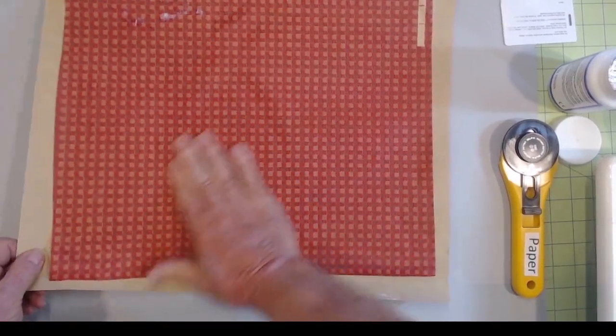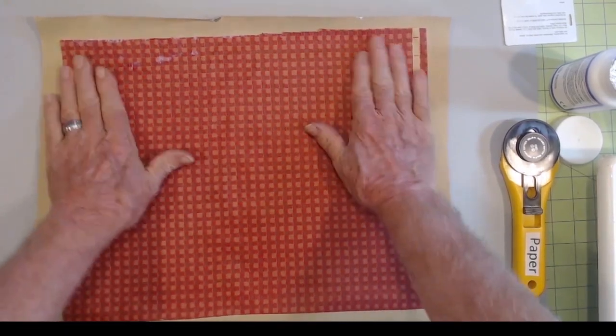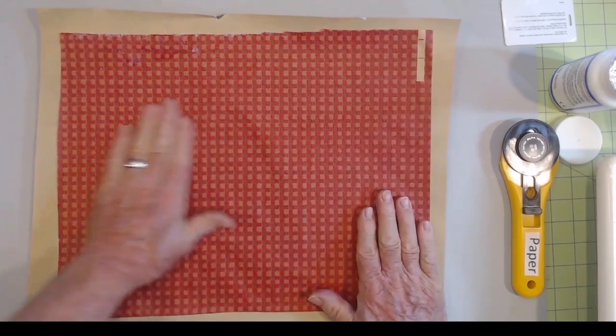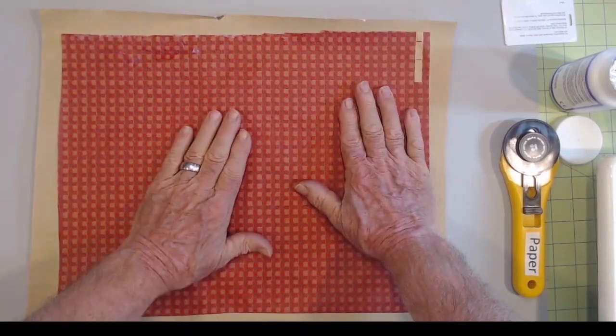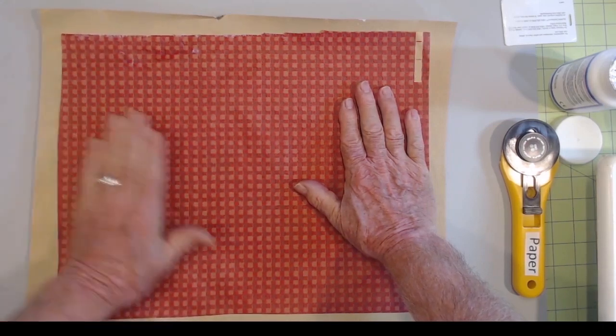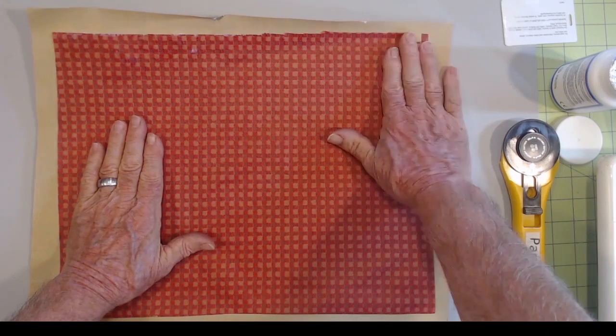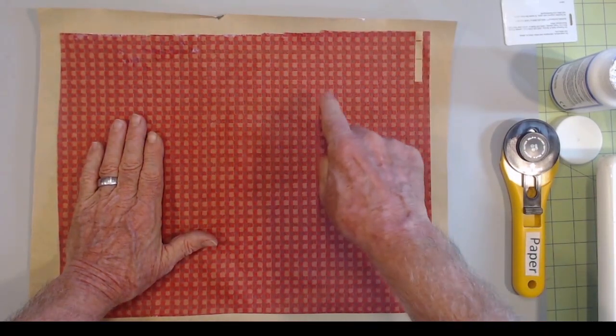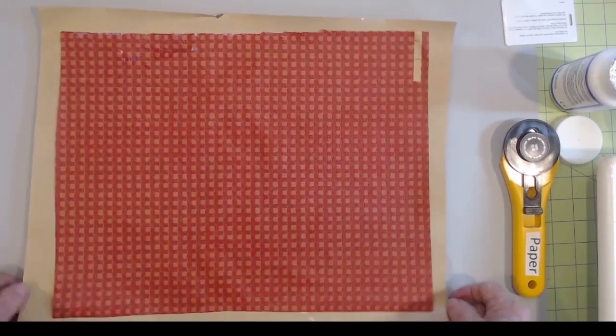And then what I'm going to do is cut these into squares of different sizes. I think what I'll do is a four and a half, a four, a three, no, four and a half, four, three and a half, three. Those are the four squares I'm going to make.